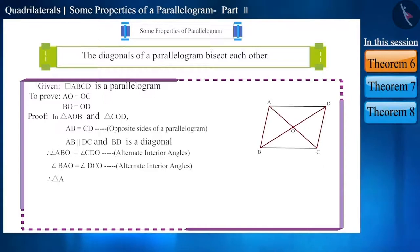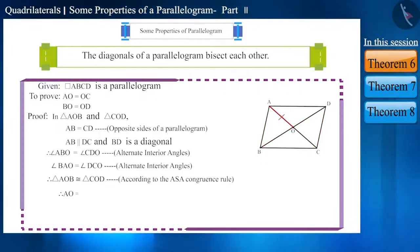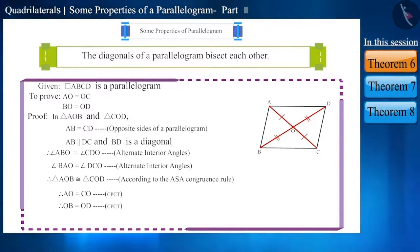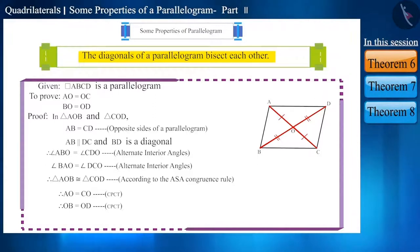And thus, both these triangles are congruent according to the Angle-Side-Angle (ASA) congruence rule. Hence, side AO is equal to side CO, and side OB is equal to side OD, because the corresponding sides of congruent triangles are equal. Now we can say that the diagonals of a parallelogram bisect each other — they divide it into two equal parts.